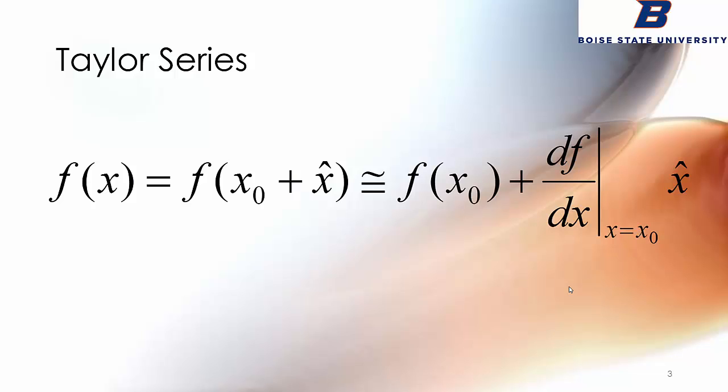That approximation is evaluating the function at x0, the initial guess we just talked about, and then take this derivative df/dx and evaluate it at that initial guess x0, and that becomes a coefficient for this correction term x hat.